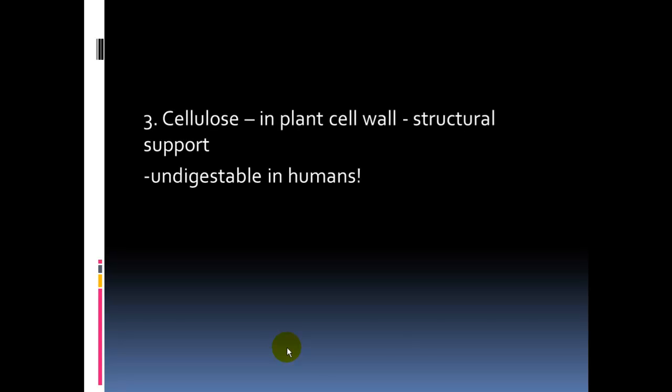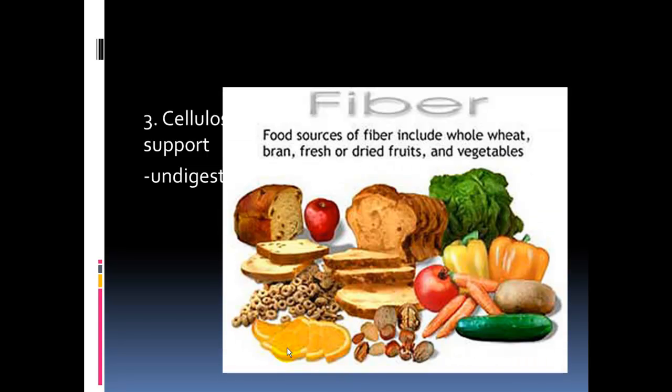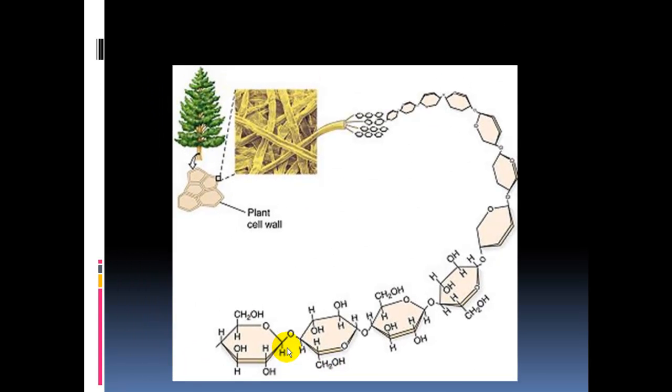The last polysaccharide is cellulose, and this is a structural molecule. So starch and glycogen are about energy storage. Cellulose is about structure, and it is undigestible to us. We do not have, we're not termites, we cannot digest cellulose and break it down. So it goes through us whole, and it provides fiber, and fiber is important in our diet. Lack of fiber in the diet is related to colon cancer. And so when we eat whole grains and vegetables and fruits and lots of salad and lettuce, this has lots of fiber.